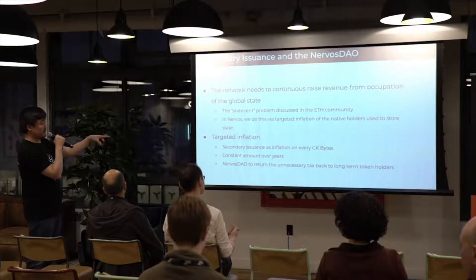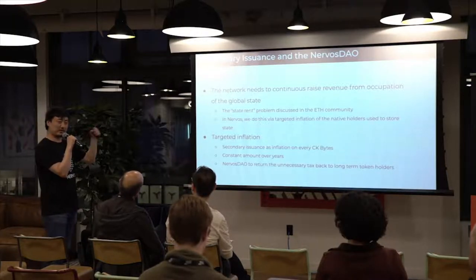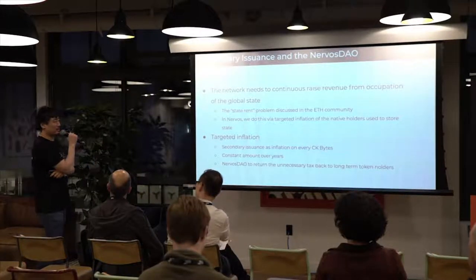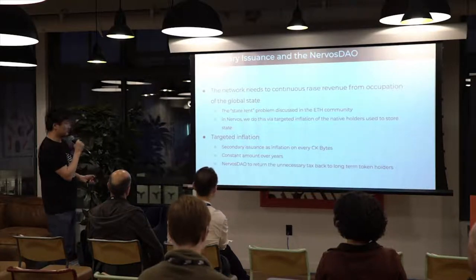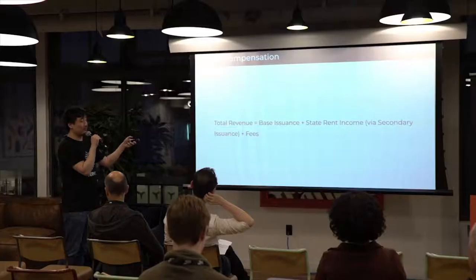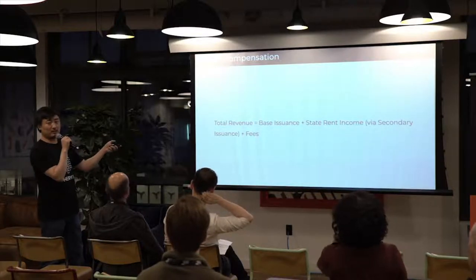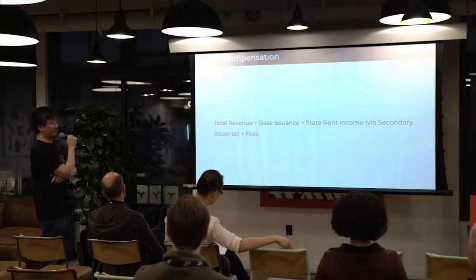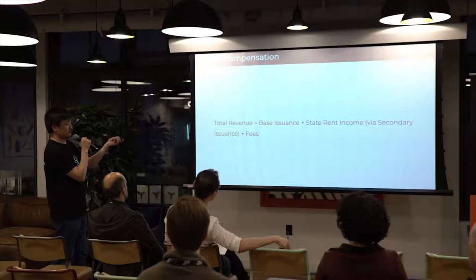This secondary issuance behaves like a cron job — every block there's a little bit of issuance. Depending on how long you store your data on the blockchain, that's the duration you're charged via targeted inflation. Miner compensation includes: base issuance, which eventually drops to zero like Bitcoin; secondary issuance, which is always constant, giving miners predictable income via state rent; and transaction fees, which work like Ethereum's gas model. This guarantees that even with no transactions at all, the blockchain keeps going — it's a preservation-focused blockchain, not transaction-focused.